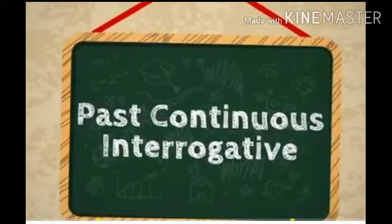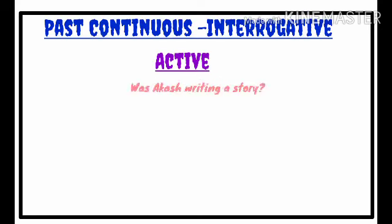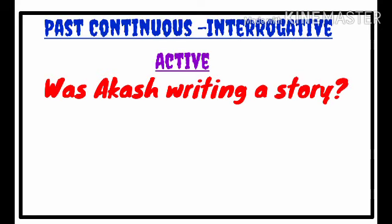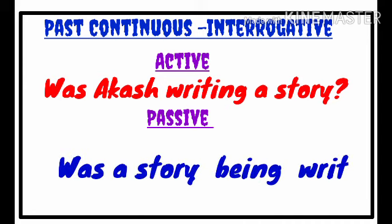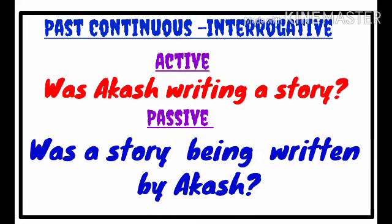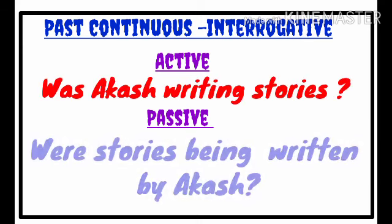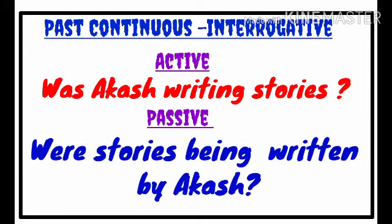Now let's see the interrogative of past continuous. The affirmative sentence is 'Akash was writing a story.' To make it interrogative, bring 'was' to the front: 'Was Akash writing a story?' When we change to passive, we use the same helping verb 'was' and the object: 'Was a story being written by Akash?' If it is plural, use 'were': 'Were stories being written by Akash?'